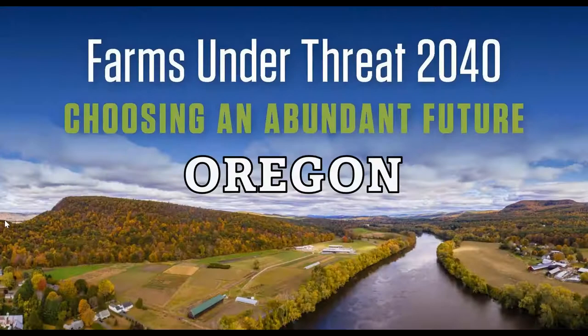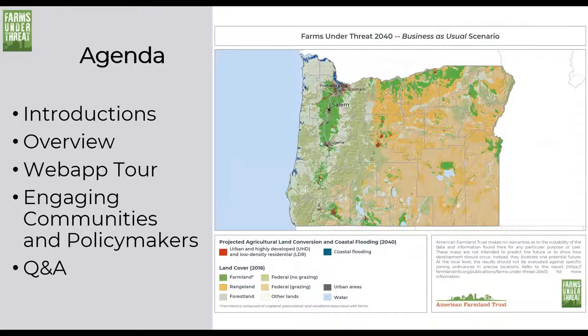Good morning. Welcome to the Oregon edition of our webinar series exploring state findings from American Farmland Trust's recently released Farms Under Threat 2040, Choosing an Abundant Future. Before we get started, let me run through some quick logistics, and while I'm doing that, you can look at the agenda for our hour together.